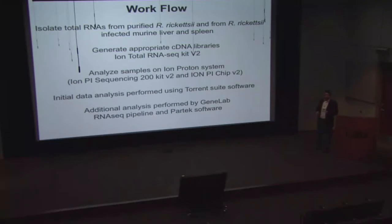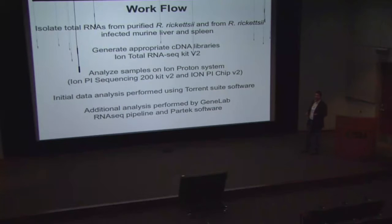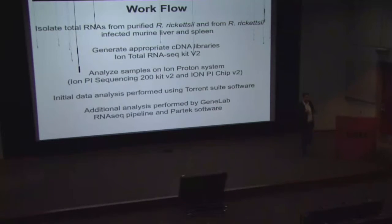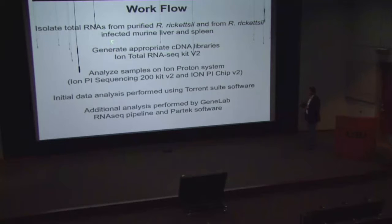We took total RNAs from bacteria purified from heavily infected in vitro Vero cells, and then from Rickettsia rickettsii murine tissue — in this case the liver and the spleen. We specifically chose the liver and the spleen because we knew the pathology and the loads in those tissues, and reviewers wanted to see the sensitivity of this assay — could we get solid, reliable data from tissue that was not heavily infected, the spleen, and one that was heavily infected, the liver? We then performed cDNA libraries and analyzed samples on the Ion Proton system available in our department.